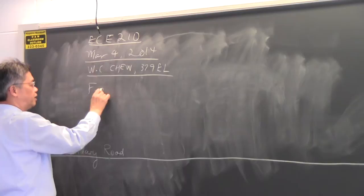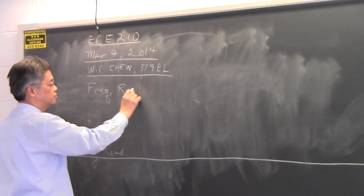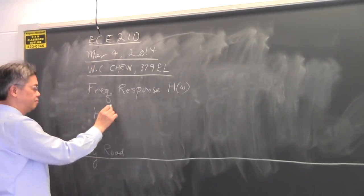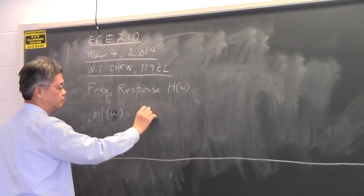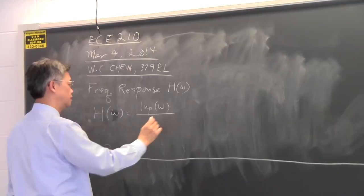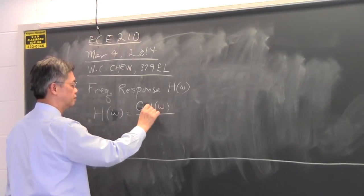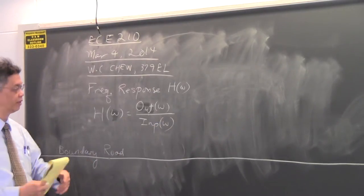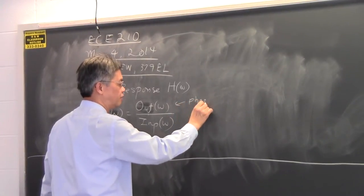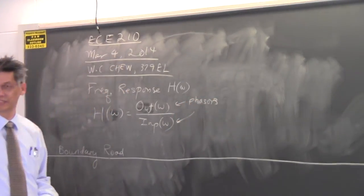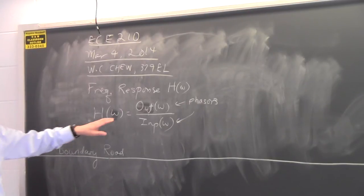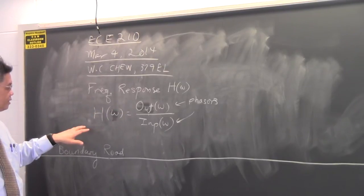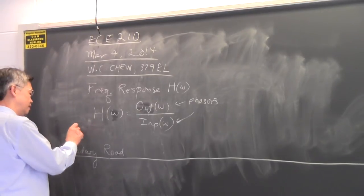So we are talking about frequency response. H of omega — H of omega is nothing but the ratio between the output phasor over the input phasor. So this could be the ratio between two phasor quantities, and remember that these are all phasors. When you take the ratio of two phasors, they have to be at the same frequency, and that frequency is the operating frequency. The ratio of output to input is called the frequency response.